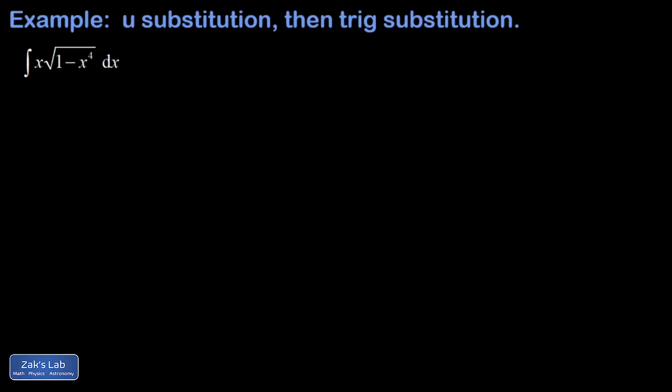In this video we're computing a pretty tough integral — the integral of x times the square root of 1 minus x to the fourth. It turns out this integral requires u-substitution and then trig substitution, and then we're going to have to use some trig identities to clean things up at the end.